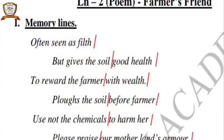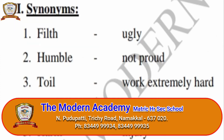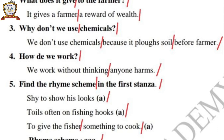Hi children, welcome back. This is your material reading session. Take your material, take a pencil and start. The poem title is Farmer's Friend. This poem is for your memory poem. The memory lines are given here. There are five sections: first - memory lines, second - synonyms, third - rhyming words, fourth - question and answer, fifth - fill in the blanks.